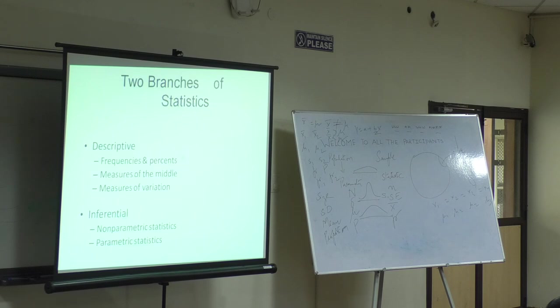Two branches of statistics. What are they? Descriptive and inferential. Descriptive - it is all about frequency, percentages, measure of the middle value, that's nothing but median, or measures of variation. Anyone will tell me very quickly: standard deviation, range, variance, and all those things come under the measures of variation. And I have told you inferentially, you have two things under it: parametric and non-parametric.